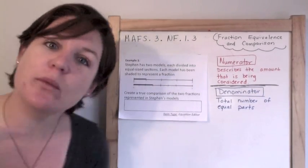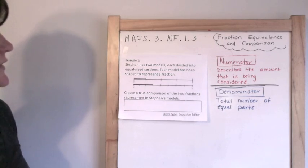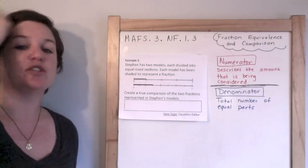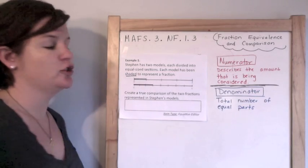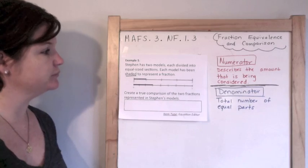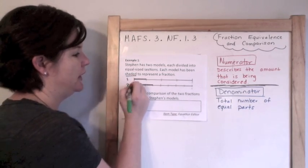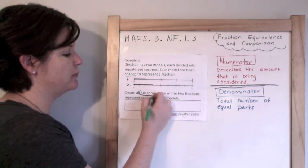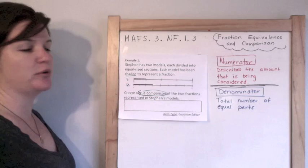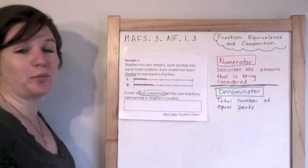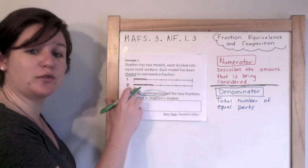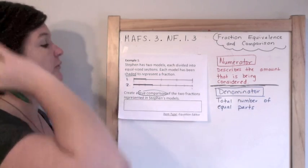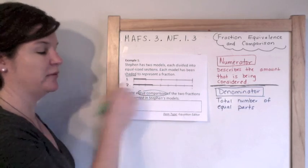So let me teach you. We're with example one. Stephen has two models, each divided into equal size sections. Each model has been shaded to represent a fraction. So here's the two models, this is model one and model two. The directions say create a true comparison of the two fractions represented in Stephen's model. So basically, I need to figure out what these two fractions are and then write whether they're greater than or less than one another.